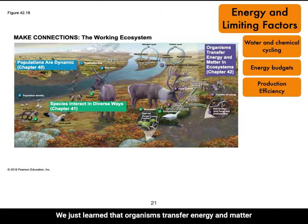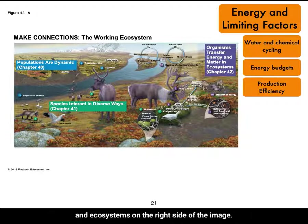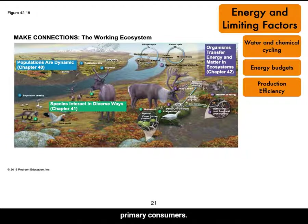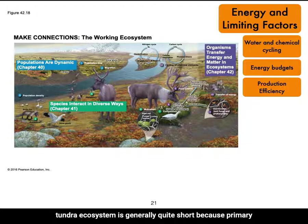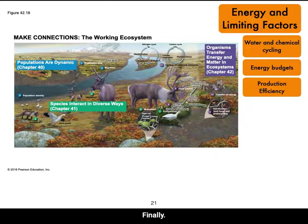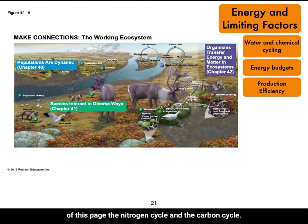We just learned that organisms transfer energy and matter in ecosystems. On the right side of the image, you see the transfer of energy between primary producers, primary consumers, and secondary consumers. The food chain or food web in the tundra ecosystem is generally quite short because primary production is lower than in other ecosystems. Two important chemical cycles are also shown at the top of the image: the nitrogen cycle and the carbon cycle.